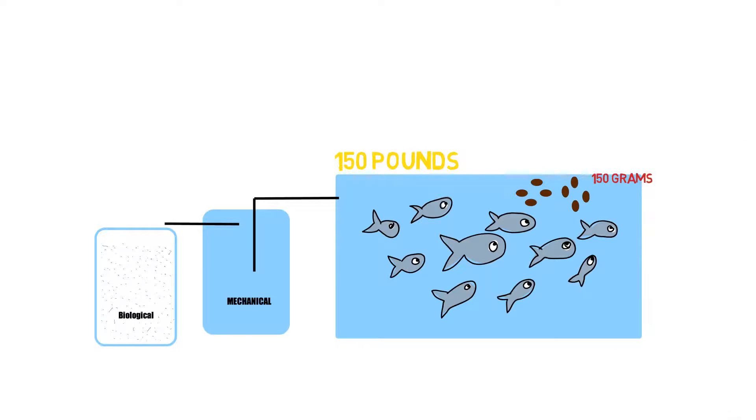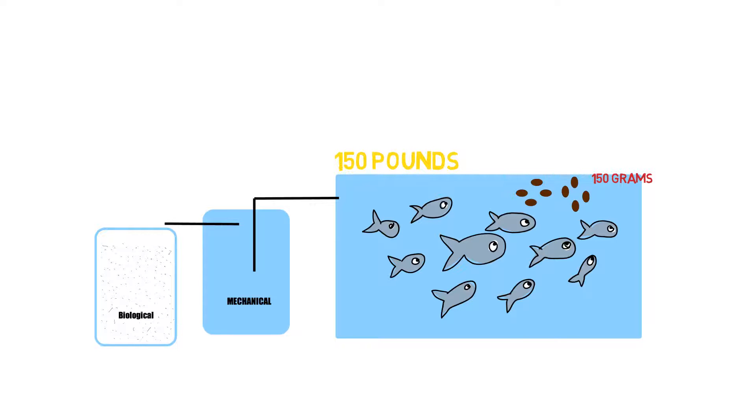And let's say we're going to feed the fish 150 grams of feed per day. And we'll assume, this is not the exact number, but I'll just give an example. We'll assume that from that 150 grams of feed, the fish produce 1.5 milliliters of ammonia.